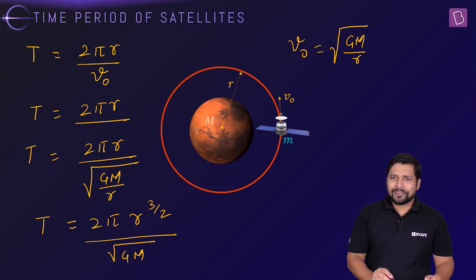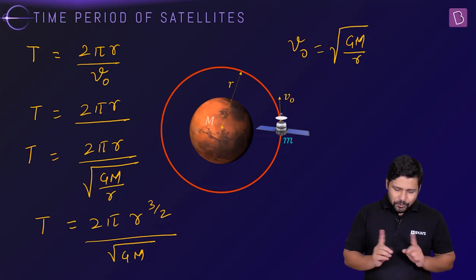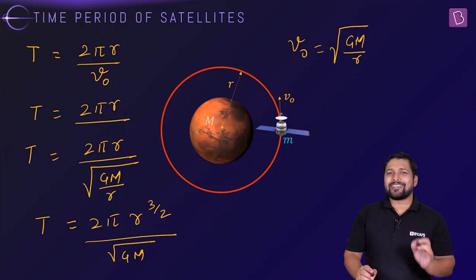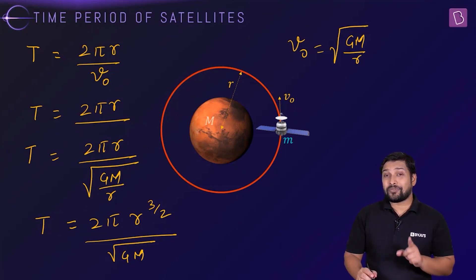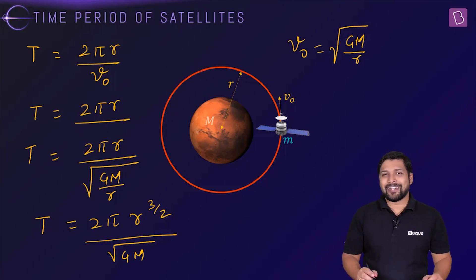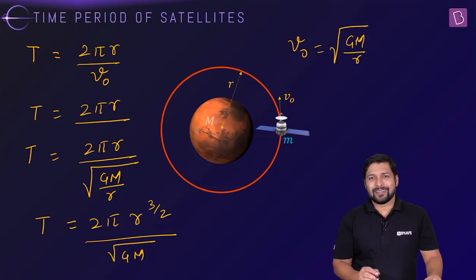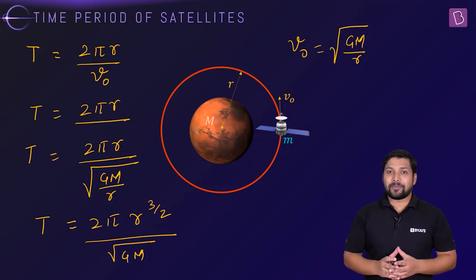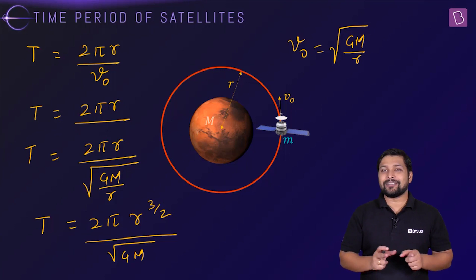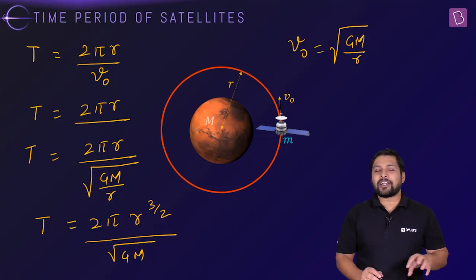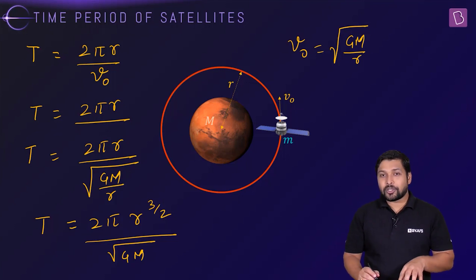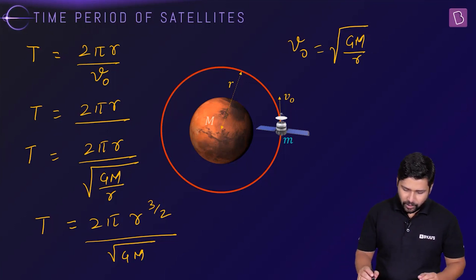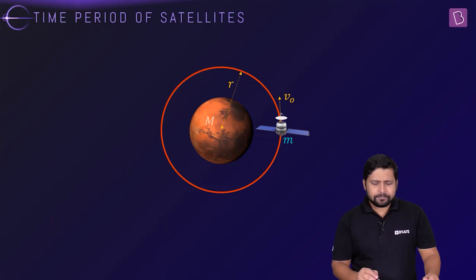Squaring both sides of this expression gives the same result as Kepler's law of time periods — T² is directly proportional to r³, the cube of the mean distance. This confirms that Kepler's law applies to satellites whether they move in circular or elliptical orbits.